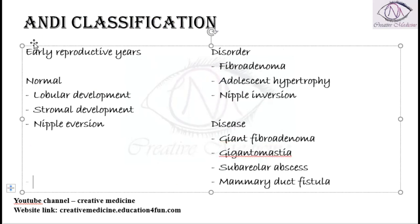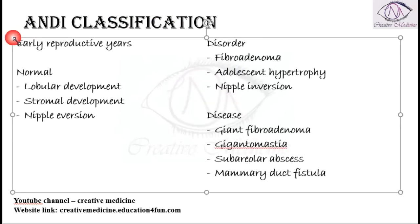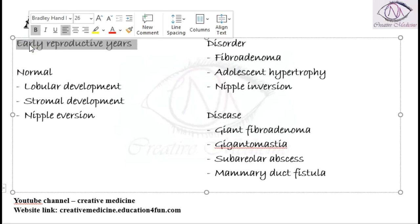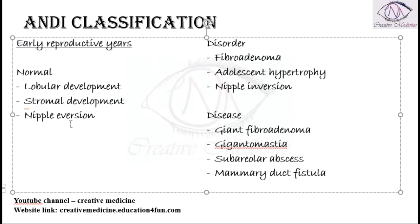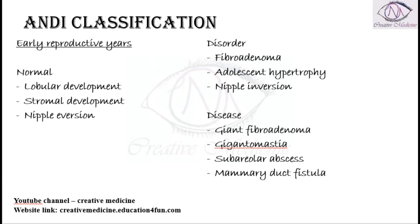To summarize: in Early Reproductive Years, normally we see Lobular Development, Stromal Development, and Nipple Eversion. Disorders are Fibroadenoma, Adolescent Hypertrophy, and Nipple Inversion. Whereas diseases are Giant Fibroadenoma, Gigantomastia (that is Big Breast), Subareolar Abscess, and Mammary Duct Fistula.